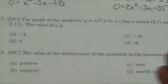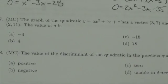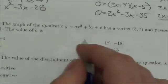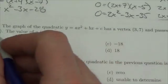(2,11). The value of a is... Okay, so what we want to do here, and maybe we'll do this right here, is we're going to build this equation because we're given the vertex and a point that it goes through.